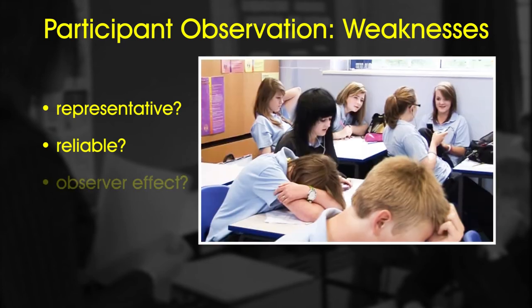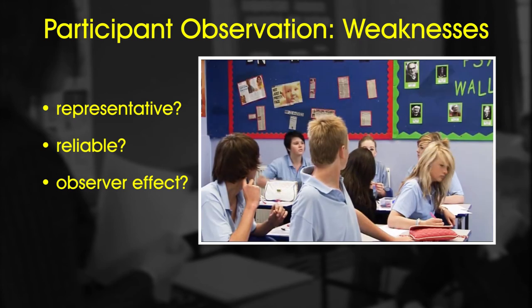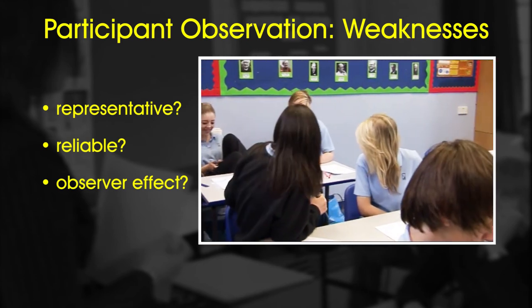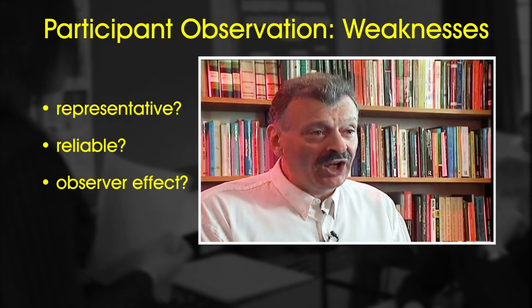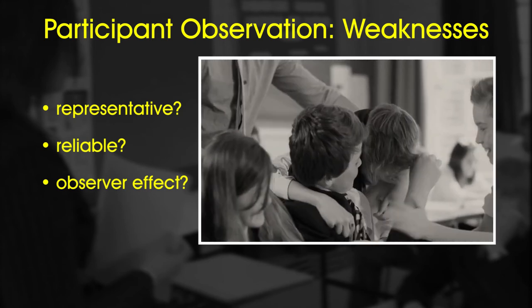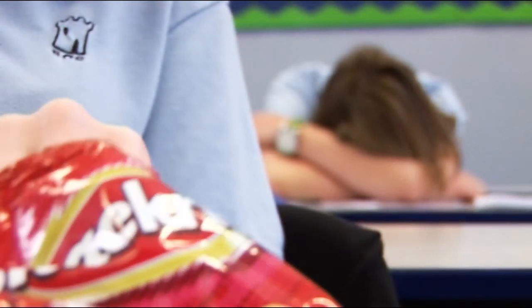Another potential weakness is the observer effect – those being studied may change or exaggerate their behaviour just because they're being observed. But Paul Willis doesn't think this is necessarily a weakness: 'The very things that were being exaggerated were the things within the heart of their culture that I was interested in. So some degree of amplification is in one way no bad thing.' So what are we to make of participant observation? Well, it doesn't provide us with a lot of statistics or tests that can be repeated under controlled conditions. But it does shine a light on human behaviour in real world situations, and that can illustrate, question and sometimes even help change established sociological ideas.